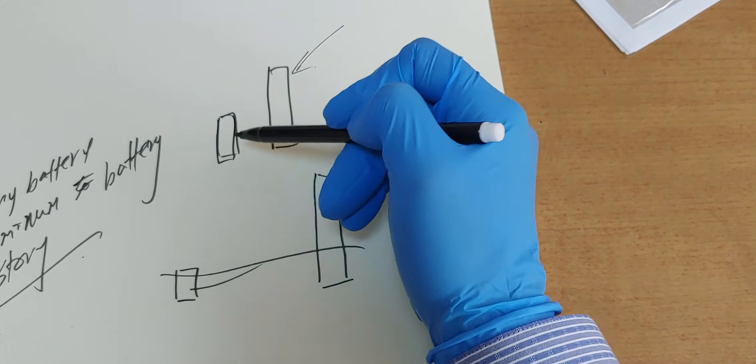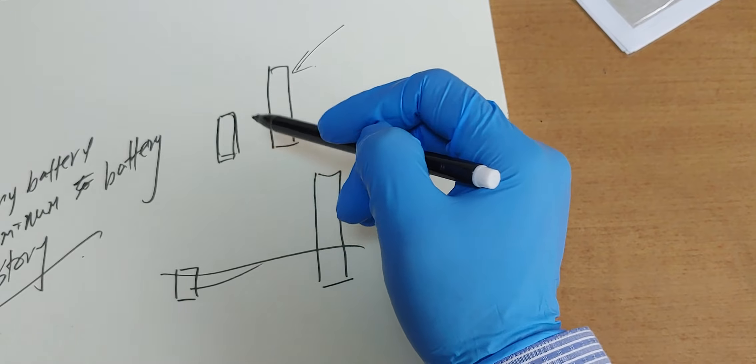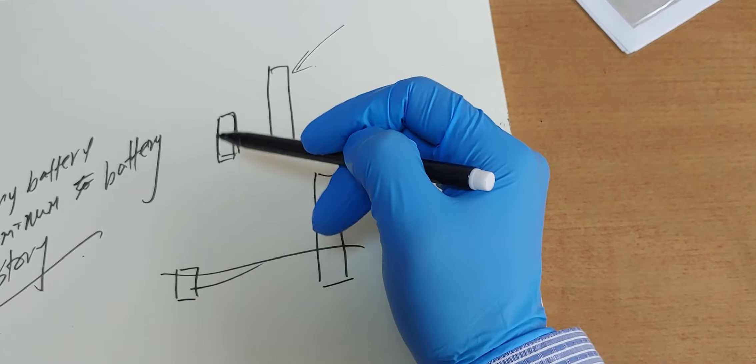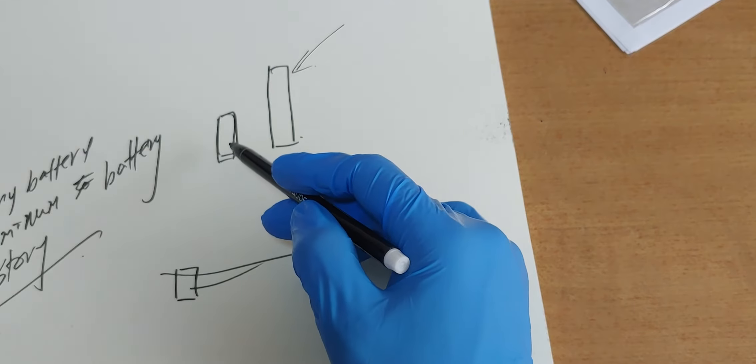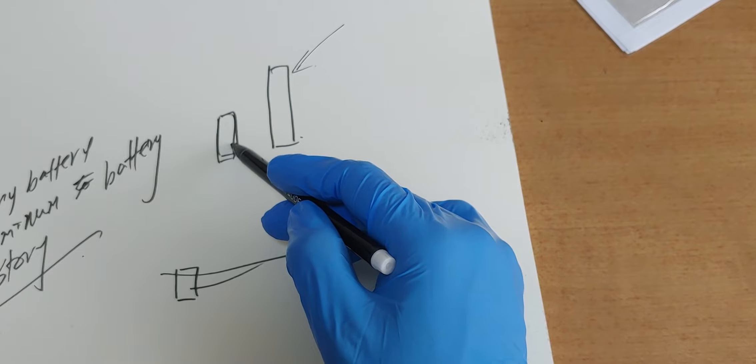On the other hand, Aluminum battery is very safe and cheap. We cannot make this size. We cannot turn this size into this one.